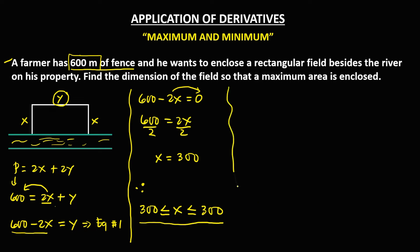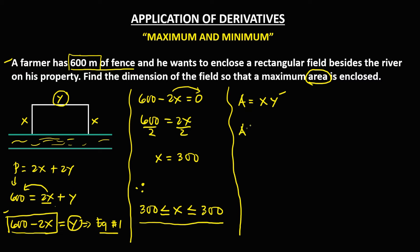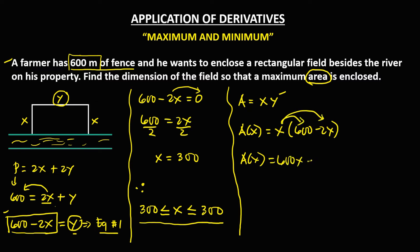To find the dimension that gives the maximum area, we start with the area of a rectangle: length times width. Using x and y, area equals x times y. From equation one, y equals 600 minus 2x, so we substitute: area in terms of x equals x times (600 minus 2x). Distributing, that gives 600x minus 2x squared.